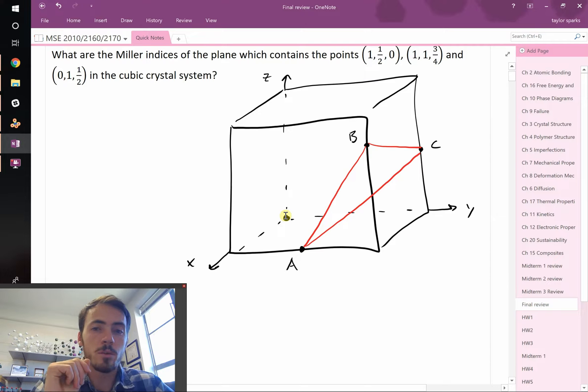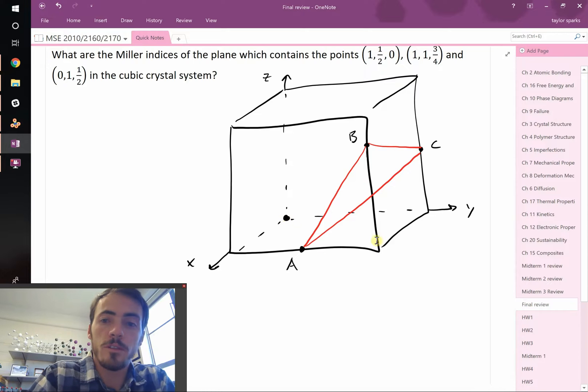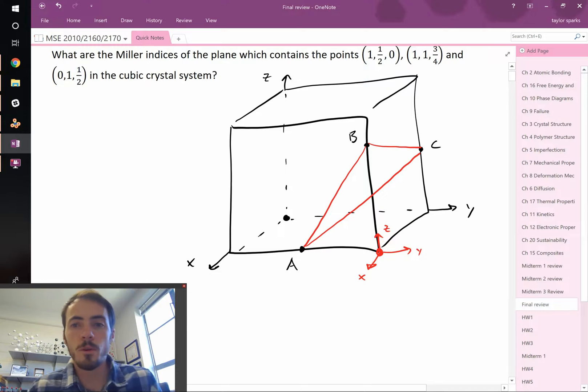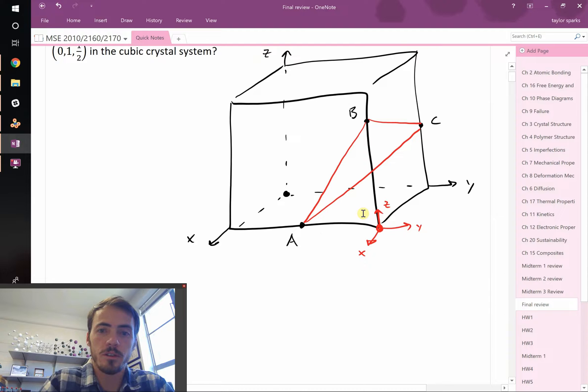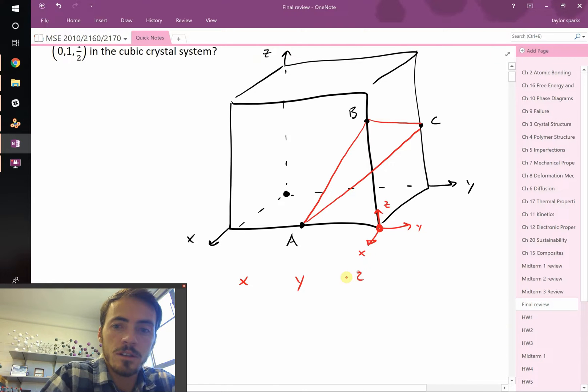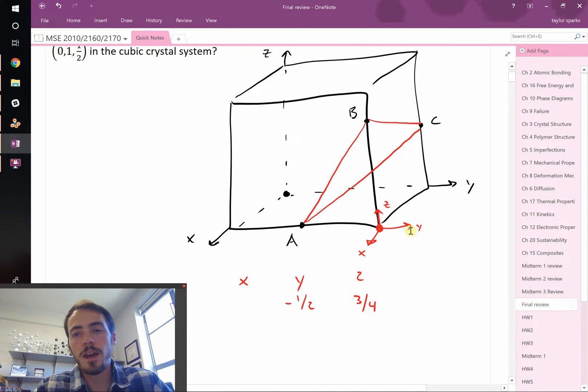We can make it work by selecting a different origin. Select this as our origin for a minute. We have a new x, y, and z. This makes it a little bit easier. It's easy to see that it's intersecting the z right here at three-fourths. It's intersecting the y at negative one-half. And x, it starts up here at three-fourths. When you go forward one full unit cell in the x-direction, it goes down a quarter, so now it's at one-half. So it technically intersects the x at negative three.